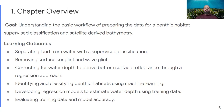Further objectives include removing surface glint and wavelengths that pollute our images and prevent better results; correcting for water depth to derive bottom surface reflectance through a regression approach; identifying and classifying benthic habitats using machine learning available in Google Earth Engine; developing regression models to estimate water depth using training data; and finally, evaluating with training data and performing model accuracy assessment.